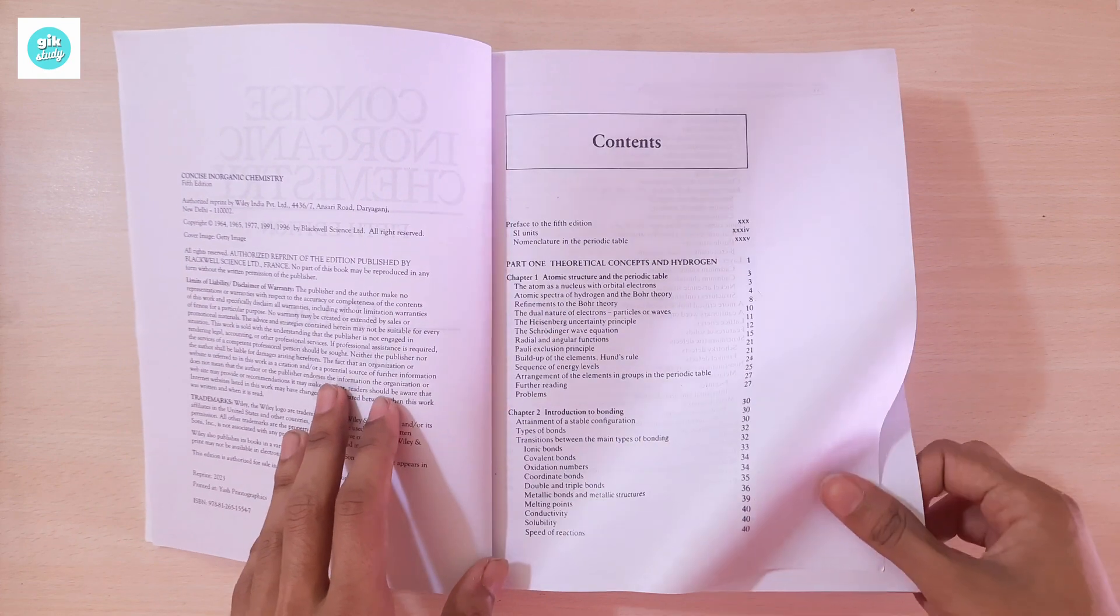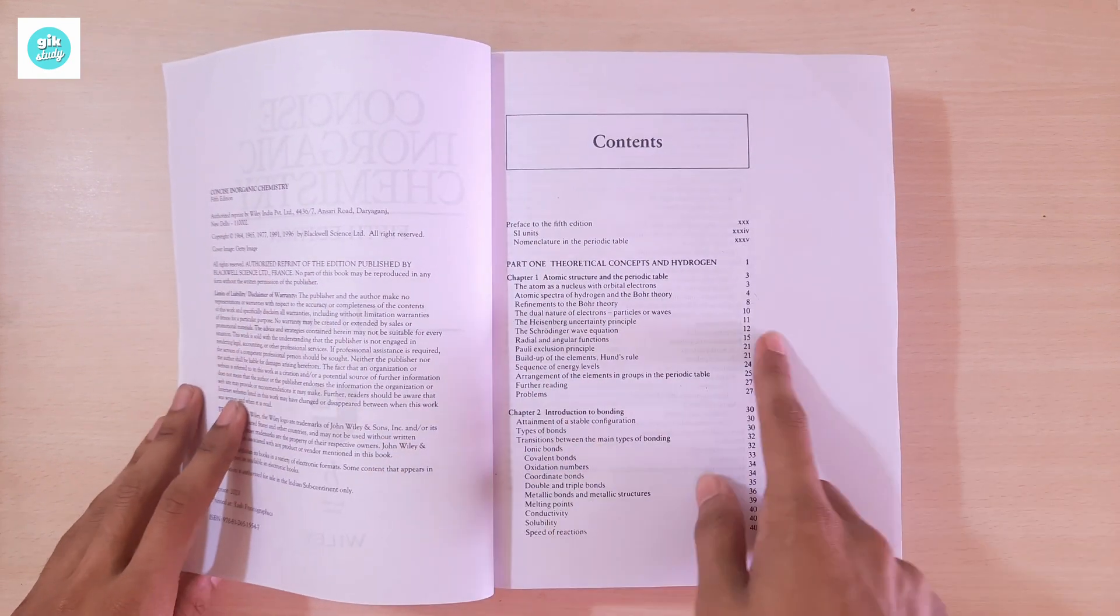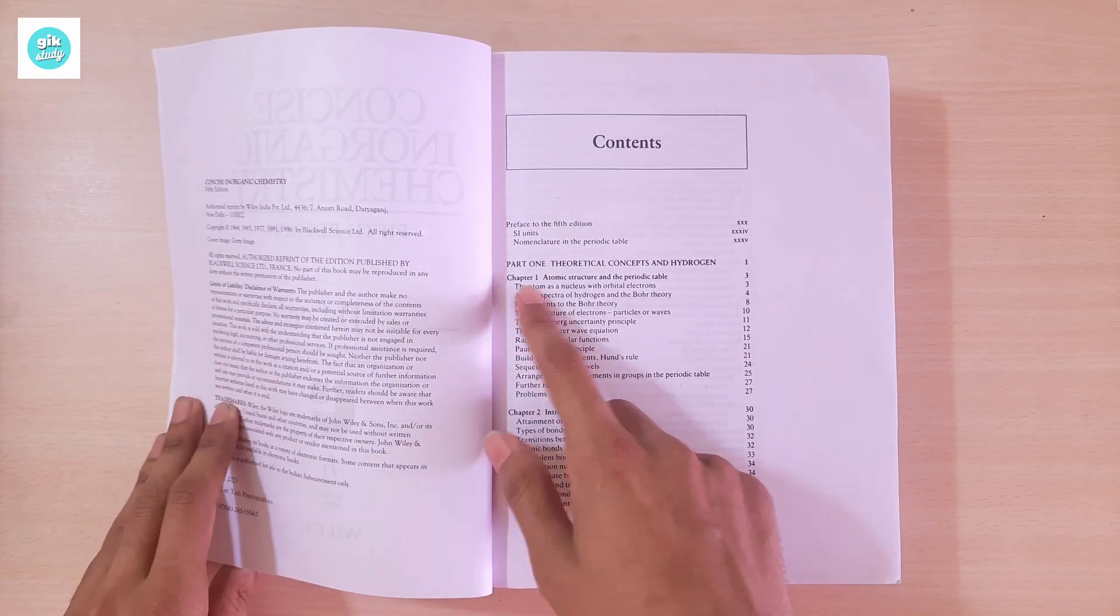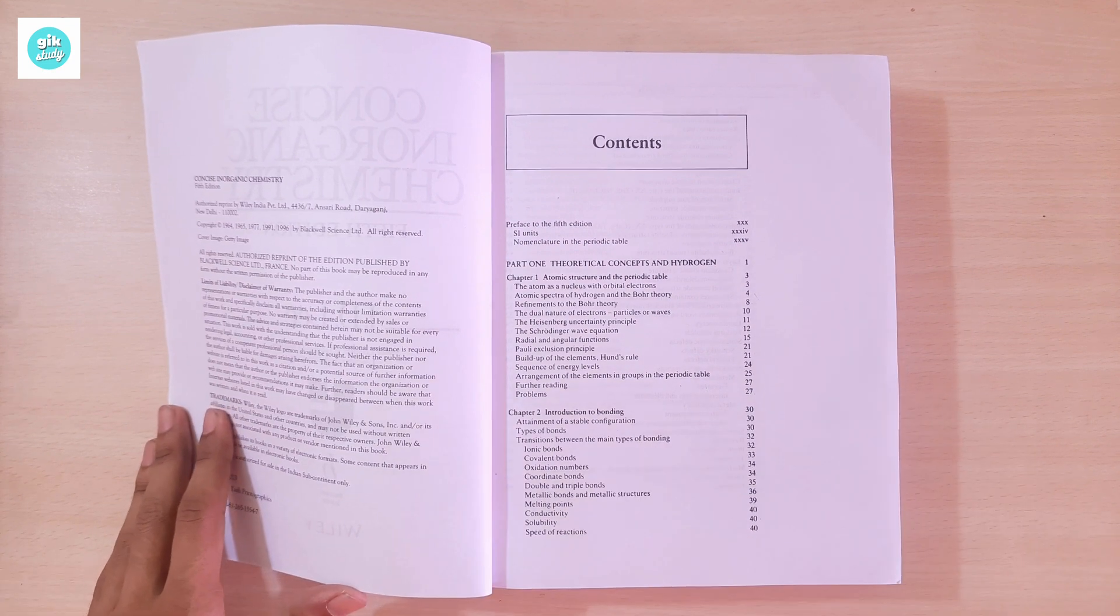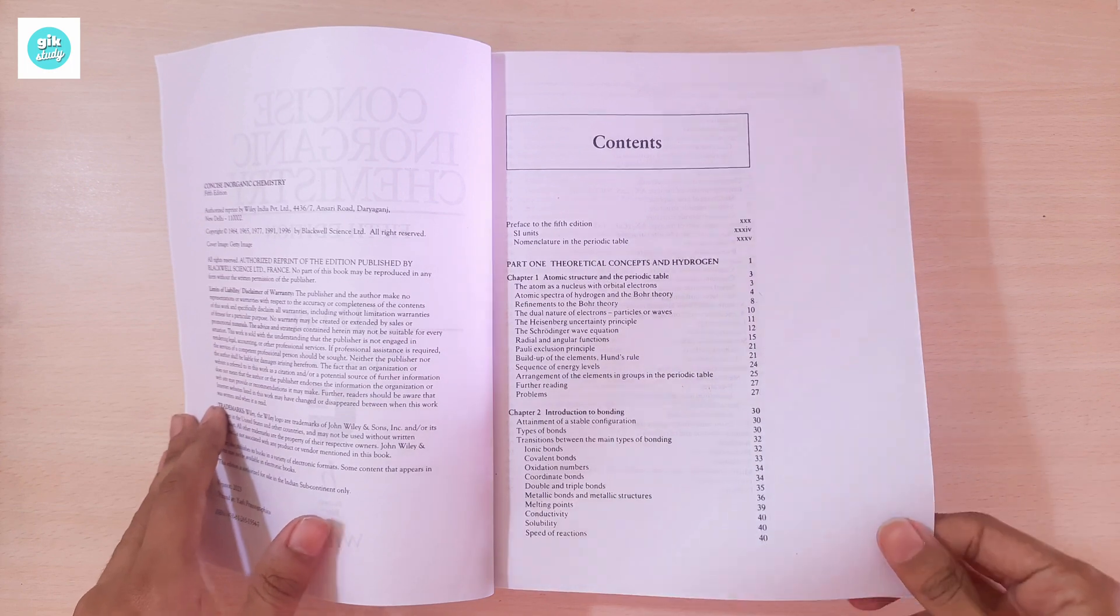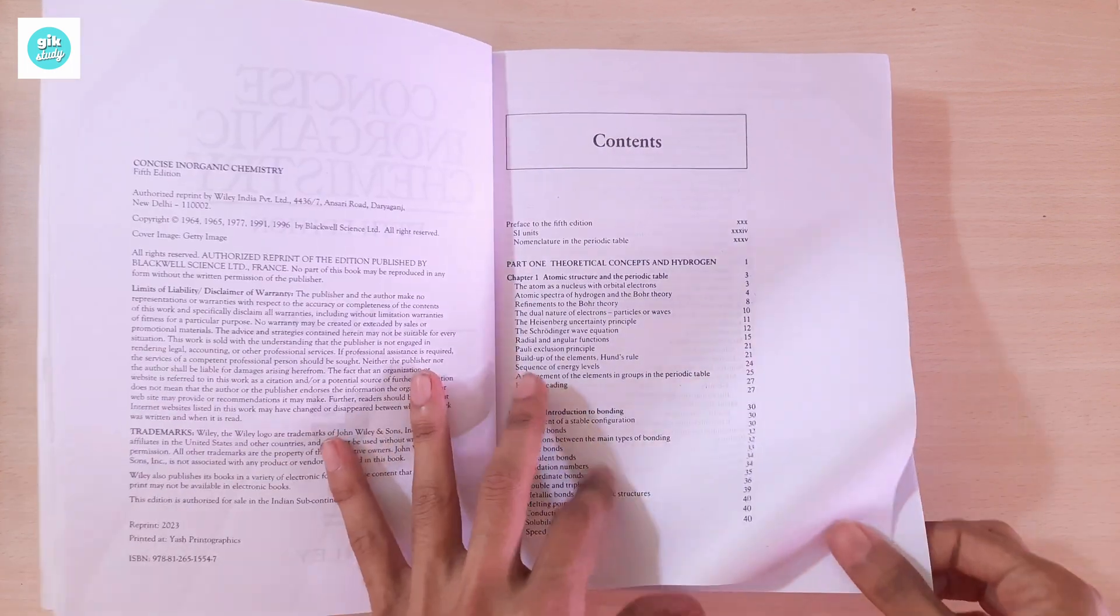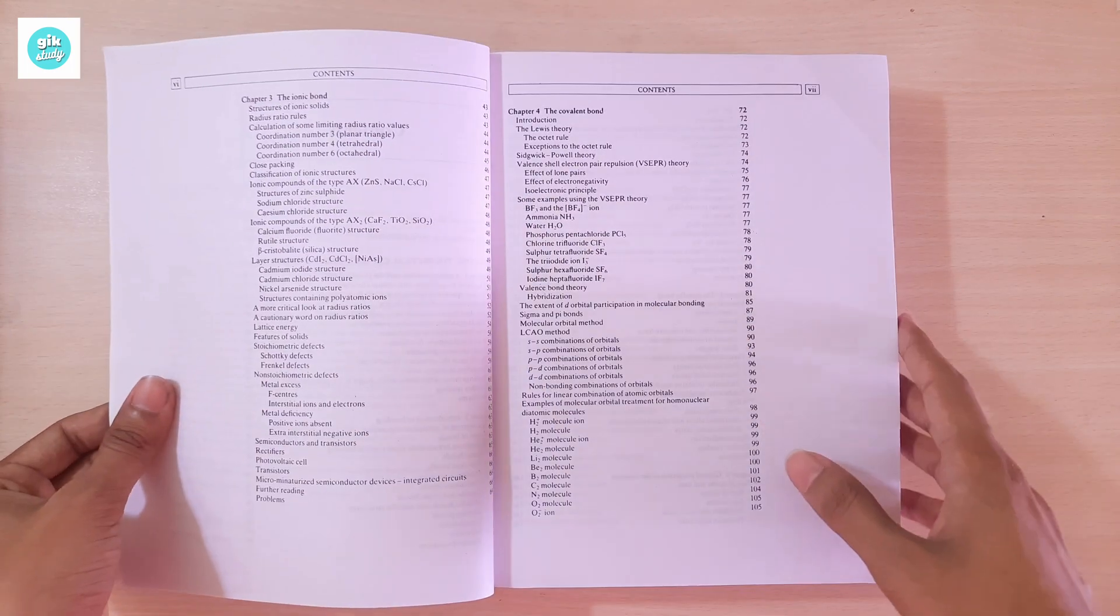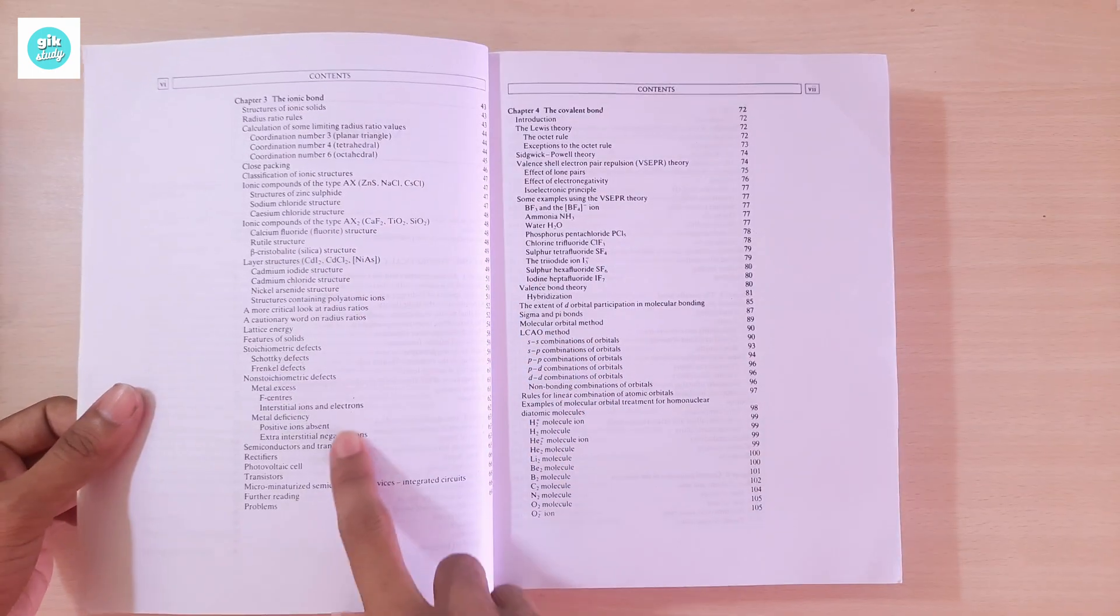Here's the contents. Part One: Theoretical Concepts and Hydrogen. Chapter 1: Atomic Structure and the Periodic Table. Chapter 2: Introduction to Bonding. Chapter 3: The Ionic Bond.